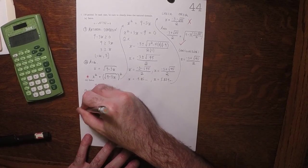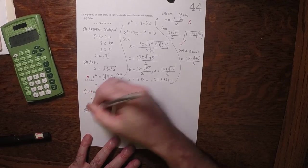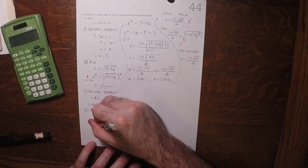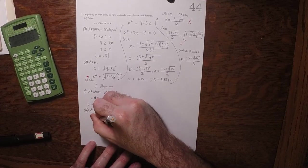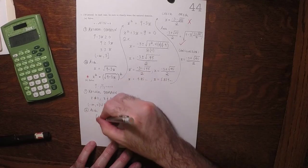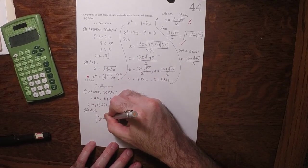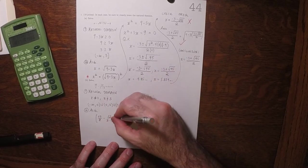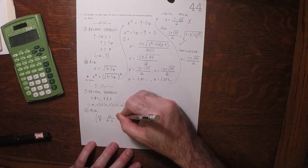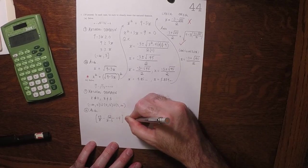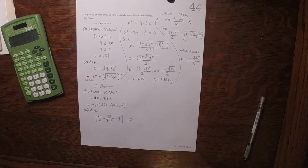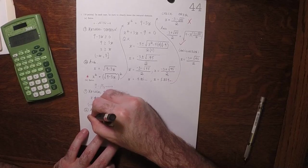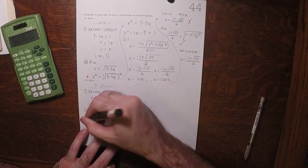Then as for the algebraic steps, we'll do 10 over z minus 12 over z minus 3 plus 4 equal to 0.